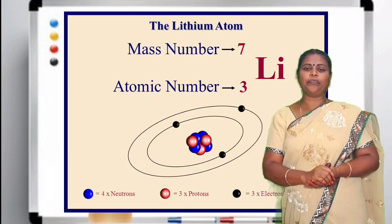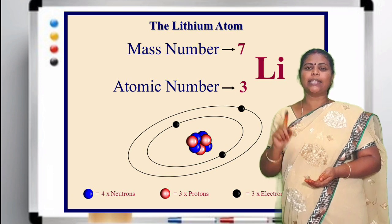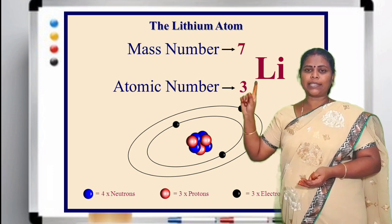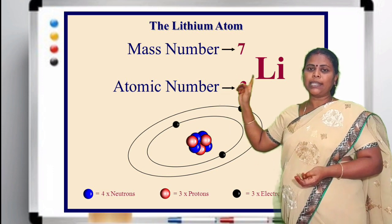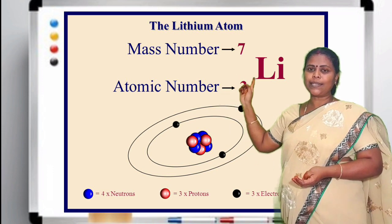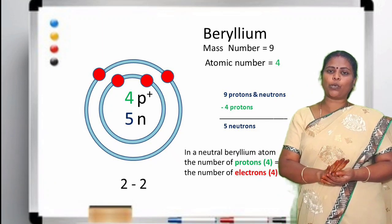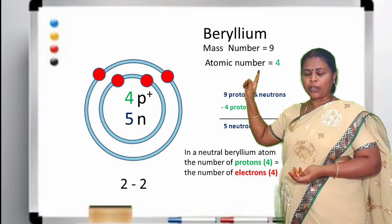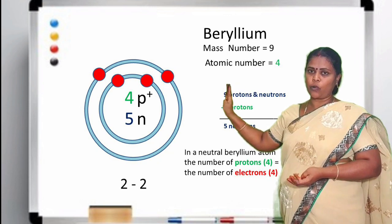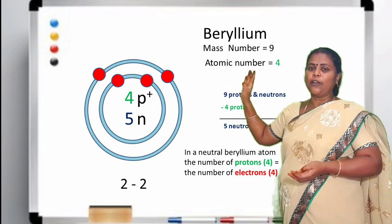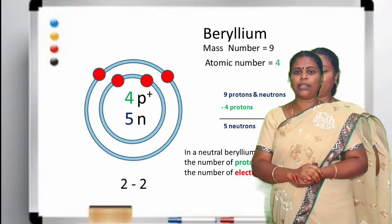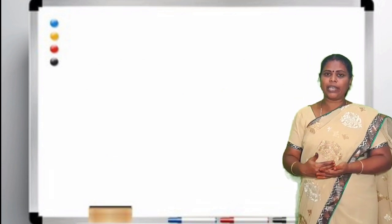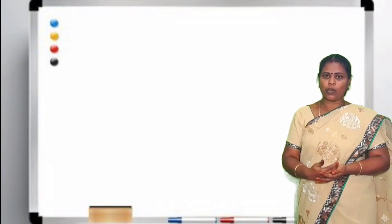Next, when you take lithium, it has 3 protons and 4 neutrons. So the atomic number is 3 and the mass number is 3 plus 4, so it is 7. When you take beryllium, it has 4 protons and 5 neutrons, so the atomic number is 4 and the mass number is 4 plus 5, so it is 9. Similarly, we can draw the atomic structure of various elements of the periodic table.